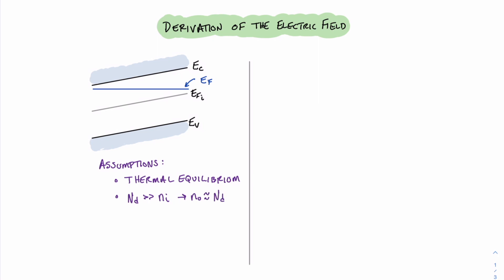As a reminder, the units for the energy levels in a band diagram are given in electron volts. Therefore, one of the things that we can say is that the distance between the Fermi level and the intrinsic level, if we divide by a value of charge E, is a potential difference that we'll call phi. Therefore, we can define this potential difference phi as being equal to 1 over the charge E times the difference in the energy levels. In this case, let's look at the difference between the Fermi energy and the intrinsic Fermi energy.